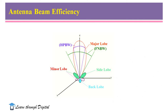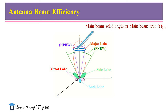Antenna beam efficiency can also be expressed in terms of main beam solid angle and minor beam solid angle. This figure illustrates the radiation pattern of an antenna directed along the z direction, where the maximum radiation is at theta equal to 0. This is the main beam solid angle, or main beam area, and this is the minor beam solid angle, or minor beam area.